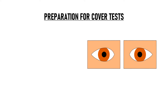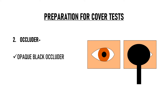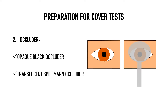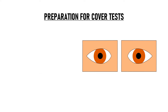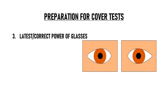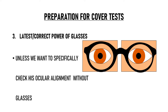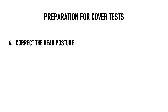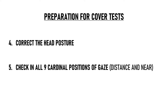We also need an occluder. We can use an opaque black occluder, a translucent occluder known as the Spielman's occluder, or simply our palm to occlude the eye. Cover tests are done with the patient's best refractive correction in place, meaning he should be wearing his correct glasses. If the patient has an abnormal head posture, we must correct it to a straight position before performing cover tests. Cover tests must be done in all 9 cardinal positions of gaze, for both distance and near.